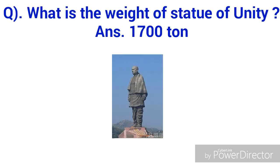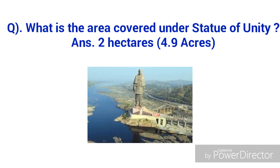What is the weight of the Statue of Unity? The answer is 1,700 tonnes. What is the area covered under the Statue of Unity? The statue and its surroundings cover more than 2 hectares, which is 4.9 acres, and it is surrounded by a 12 square kilometer artificial lake.